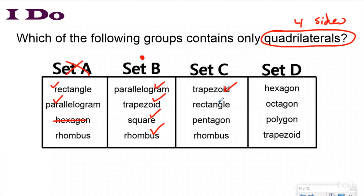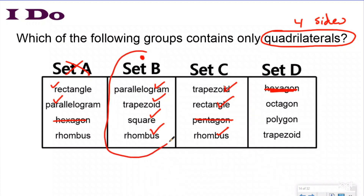And for Set D, hexagon right off the bat — that's not correct. So my answer for which set shares the attribute of having four sides and being called a quadrilateral is Set B.